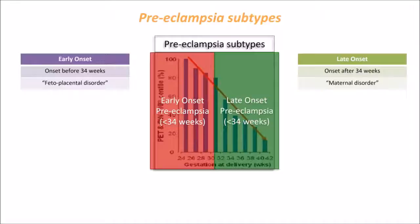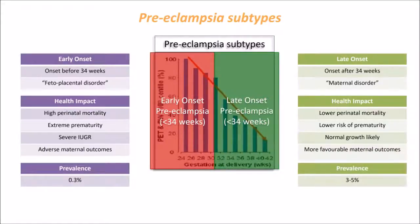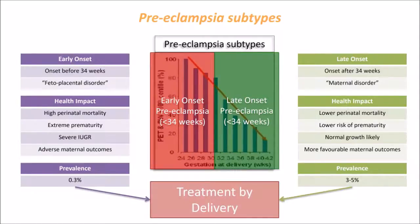Early onset pre-eclampsia is the severe form, defined by onset under 34 weeks gestation. It is regarded as a fetoplacental disorder carrying a significant health impact: high perinatal mortality, extreme prematurity, severe growth restriction, and adverse maternal outcomes including death and permanent morbidity. It affects approximately 3 per 1,000 pregnancies. Conversely, late onset pre-eclampsia is a milder form, defined by onset after 34 weeks, regarded as a maternal disorder with lower perinatal mortality, low prematurity risk, and much more favourable outcomes, affecting about 4% of pregnancies. The only effective treatment for either form is delivery.